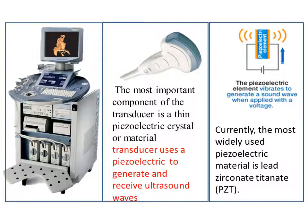The transducer contains a crystal called a piezoelectric crystal. The most important component of the transducer is a thin piezoelectric crystal or material. The transducer uses this piezoelectric crystal to generate and receive ultrasound waves. Currently, the most widely used piezoelectric material is lead zirconate titanate, or PZT — you must memorize this type of crystal.